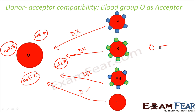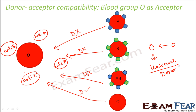So if the acceptor is O, the only person who can donate is O. But another interesting fact about blood group O is that if you observe in the past three slides, everywhere O could donate. So O is a universal donor — a person with blood group O can donate blood to any person with any blood group: A, B, AB, or O.